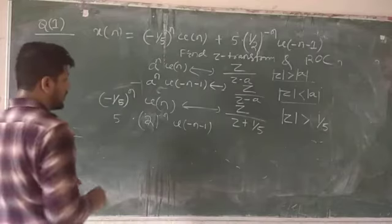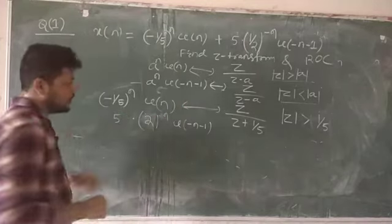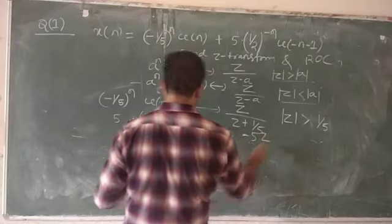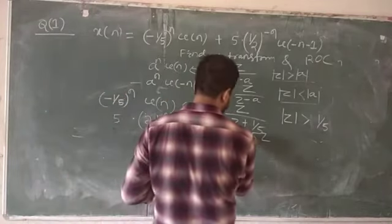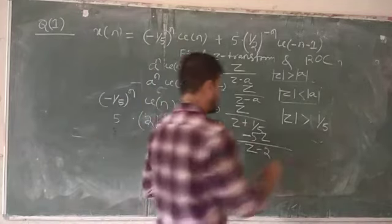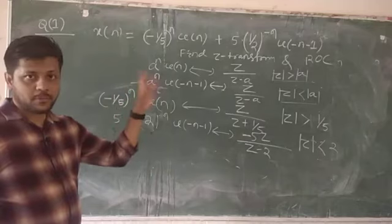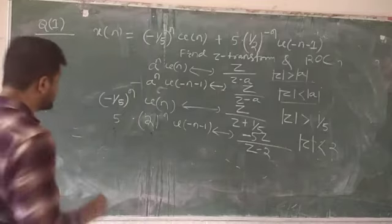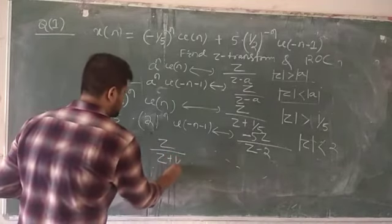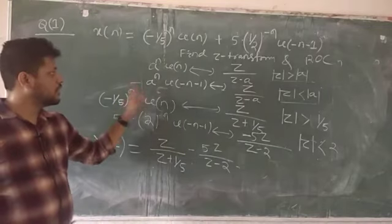The ROC for the left-sided sequence 5·2^n·u(−n−1) is |z| < 2. This signal is a two-sided signal — a combination of u(n) and u(−n−1). So the combined Z-transform is X(z) = z/(z+1/2) − 5z/(z−2).